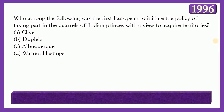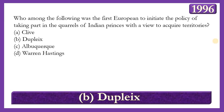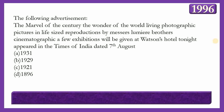Next question: Who among the following was the first European to initiate the policy of taking part in the quarrels of Indian princes with a view to acquire territories? Options: Clive, Dupleix, Albuquerque, or Warren Hastings. The answer is option B — Dupleix — who was the first to lend European troops to Indian states in their quarrels, as the French used to provide their troops to native Indian states for this purpose.